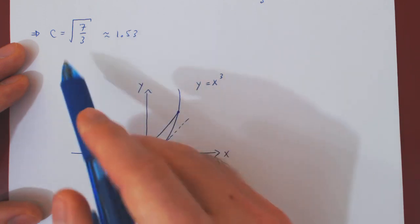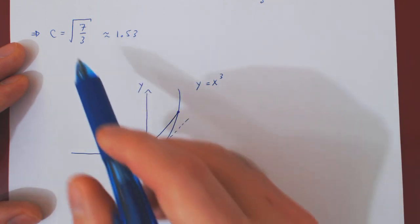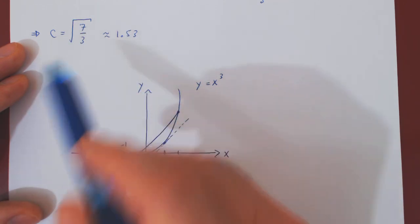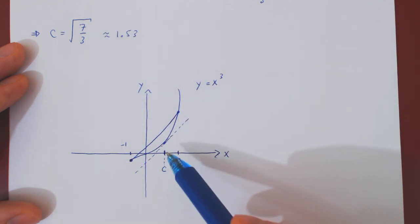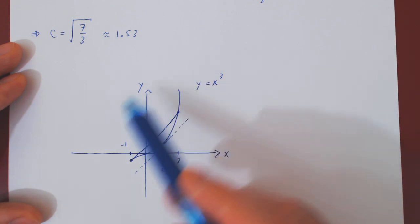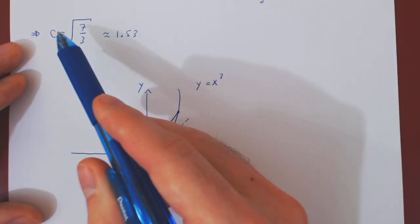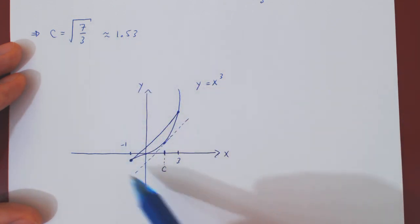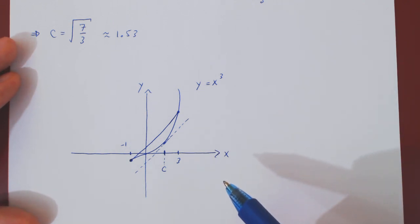And as we have found, the exact value of the point c is the square root of 7 on 3, which is approximately 1.53. So this is simply a heuristic to verify roughly that the value of c seems to be the right one.